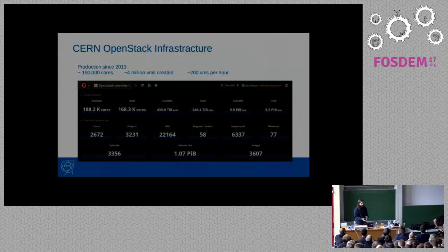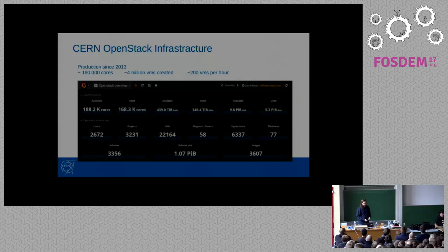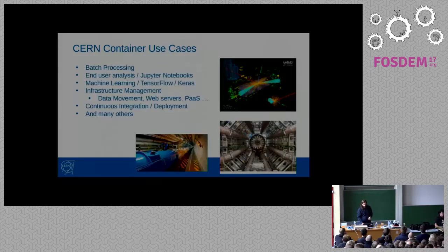About our infrastructure: this is a screenshot taken this week. We run at the moment 60 Magnum clusters, as you can see. But we have a very big infrastructure, so we can create many more.